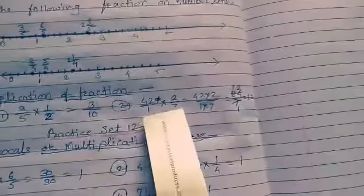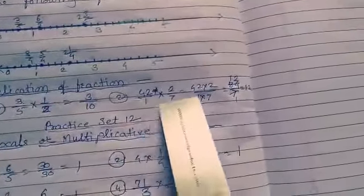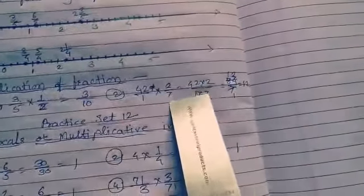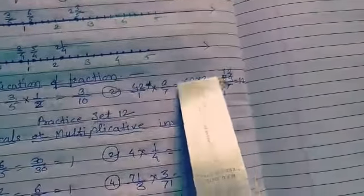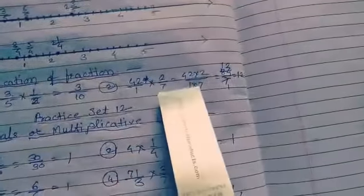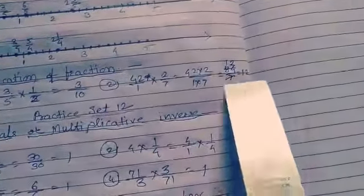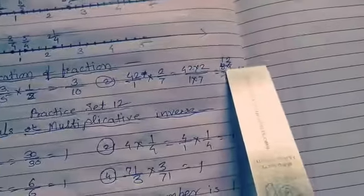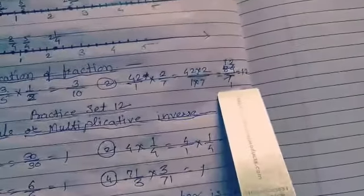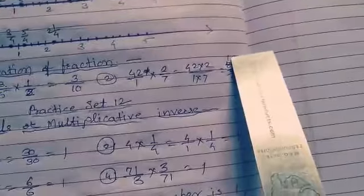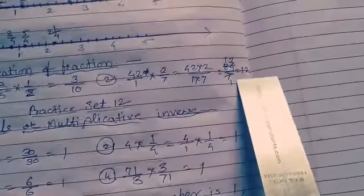Number 2: 42 upon 1 multiplied by 2 upon 7. That gives 42 into 2 upon 1 into 7, which is 84 upon 7. Simplify: 84 divided by 7 equals 12. So 12 is the right answer.